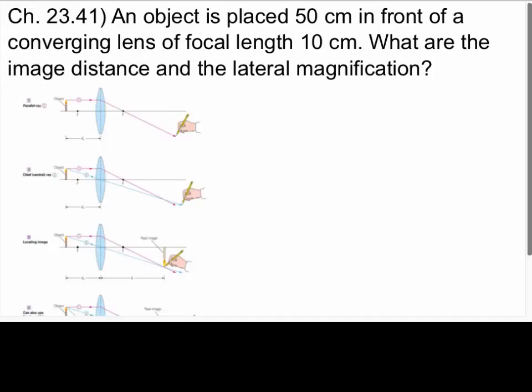Alright, for problem number 41, it says an object is placed 50 centimeters in front of a converging lens of a focal length of 10. What is the image distance and the lateral magnification?